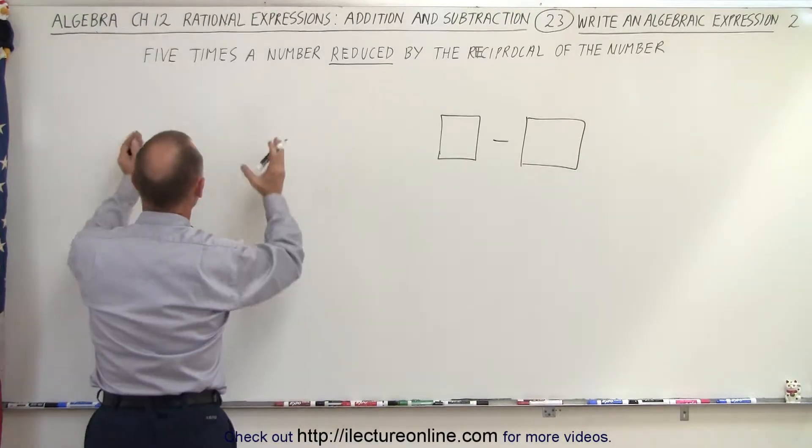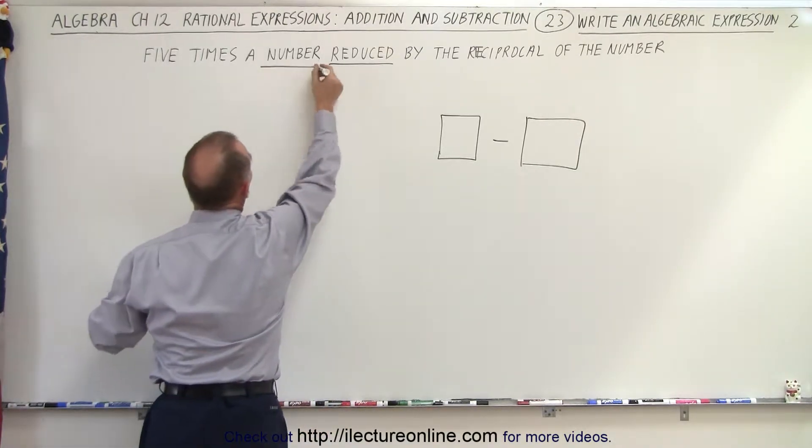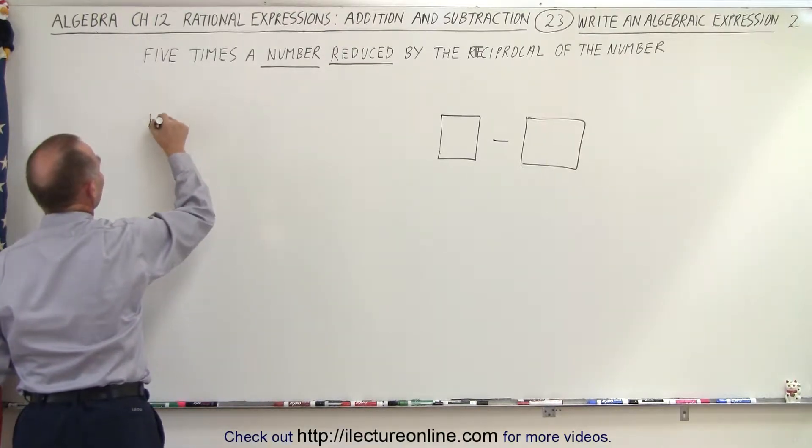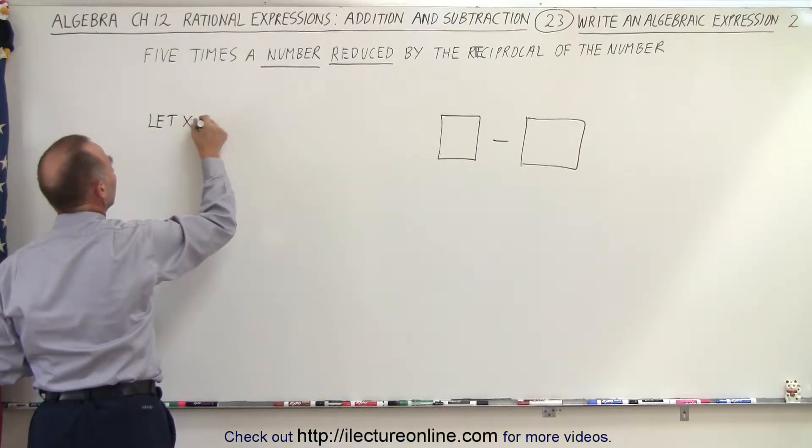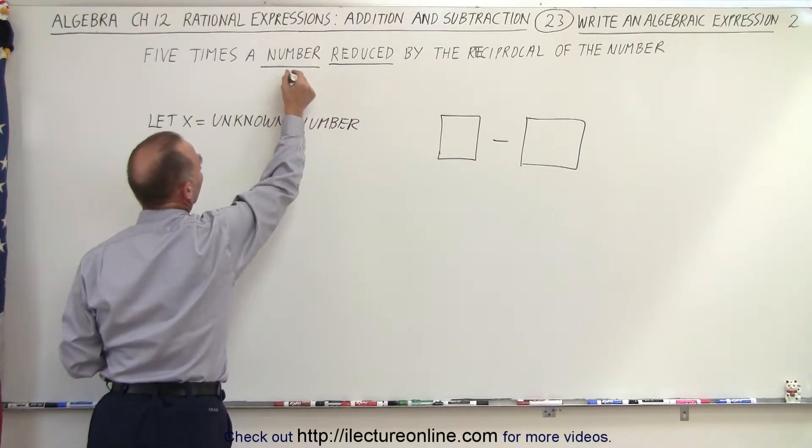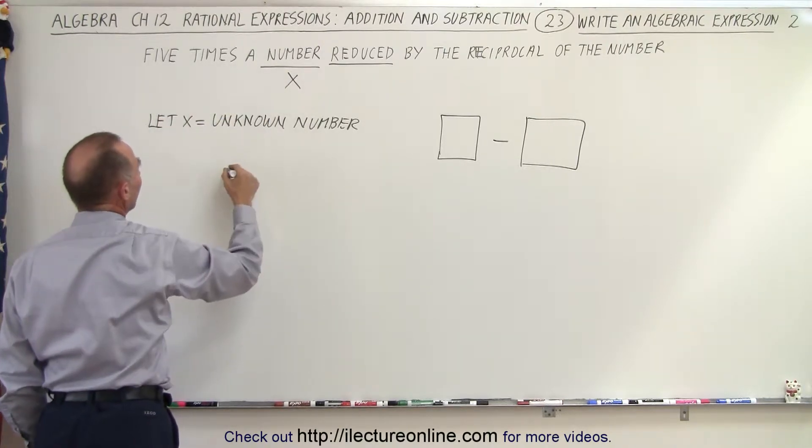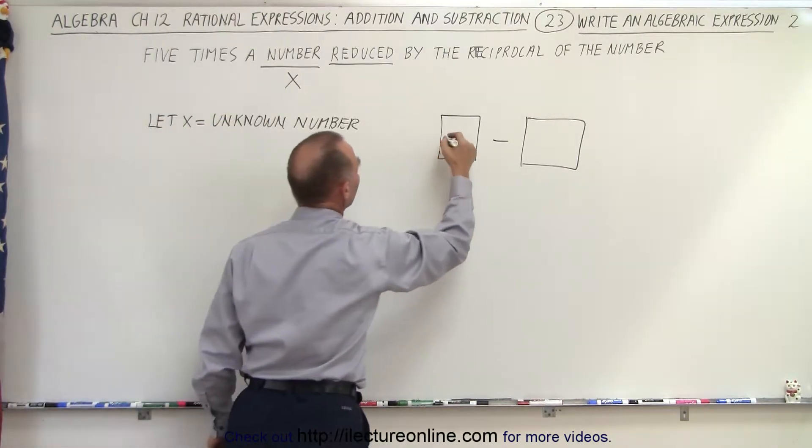Now what's that first part? It says five times a number. A number - well it's an unknown number, so let x equal the unknown number. So we're going to call this x. Now five times that number, that would be 5x, and that goes in here.